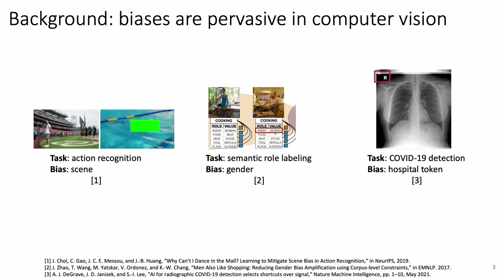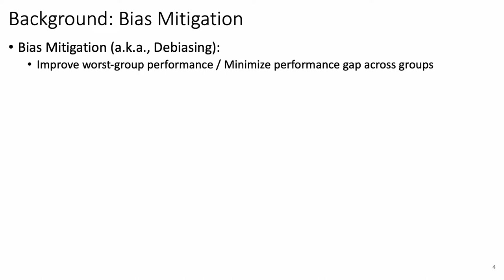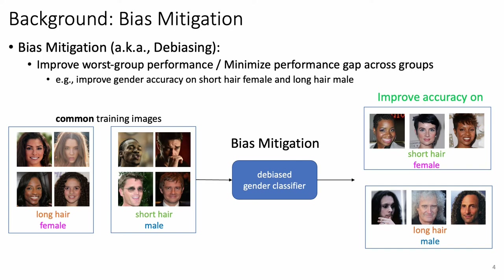Biases are pervasive in many computer vision datasets and tasks, such as scene bias in action recognition, gender bias in semantic segmentation labeling, and hospital token bias in COVID-19 detection in medical images. Computer vision models that learn these biases cause serious fairness and robustness issues. Therefore, it is imperative to perform bias mitigation, a task that focuses on improving worst-group performance. For example, a debiased gender classifier should perform better on short-haired female and long-haired male images.